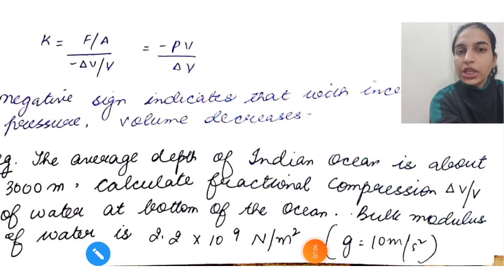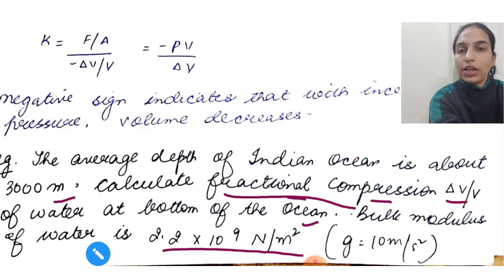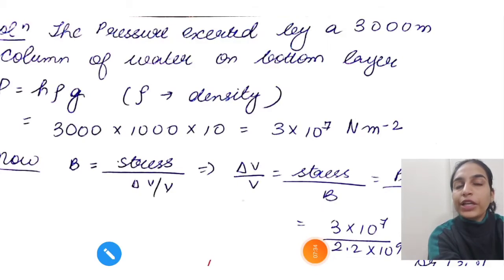Let's do a question on this. The average depth of Indian Ocean is about 3000 meters. Calculate the fractional compression delta V upon V of water at the bottom of the ocean. Bulk modulus of water is given. You need to calculate fractional compression. It's given that fractional compression is delta V upon V. You should always remember that fractional compression is delta V upon V.